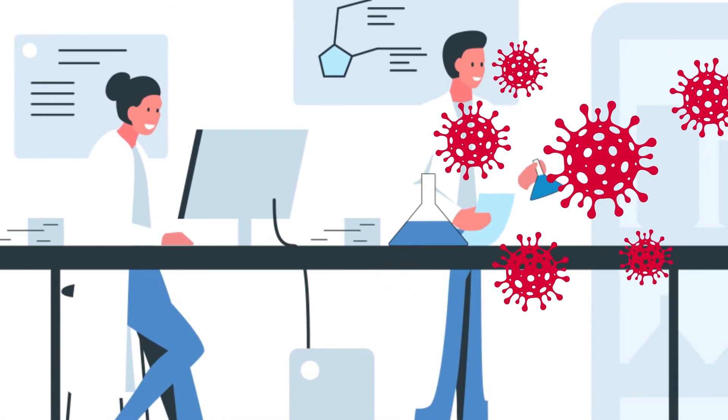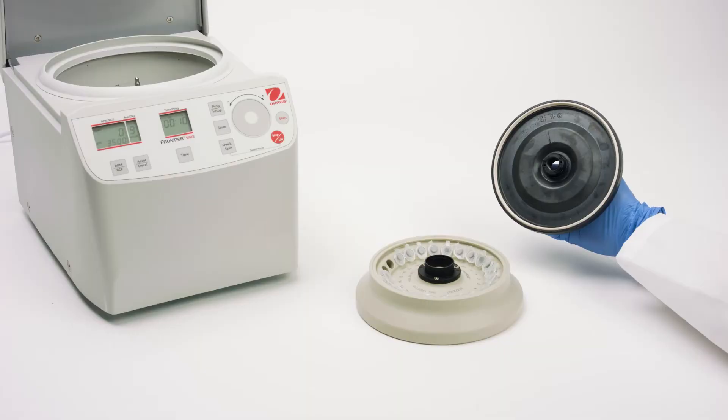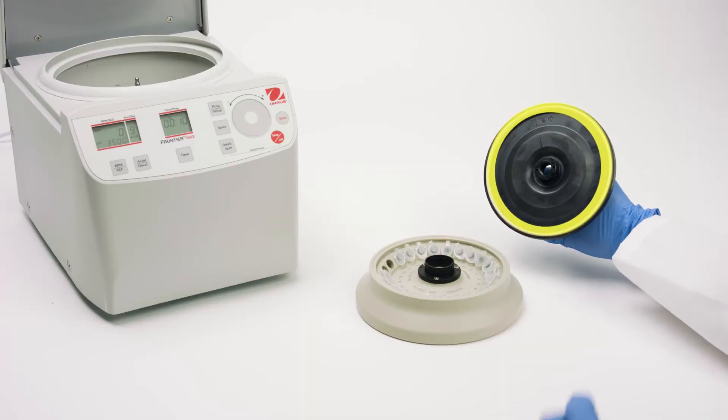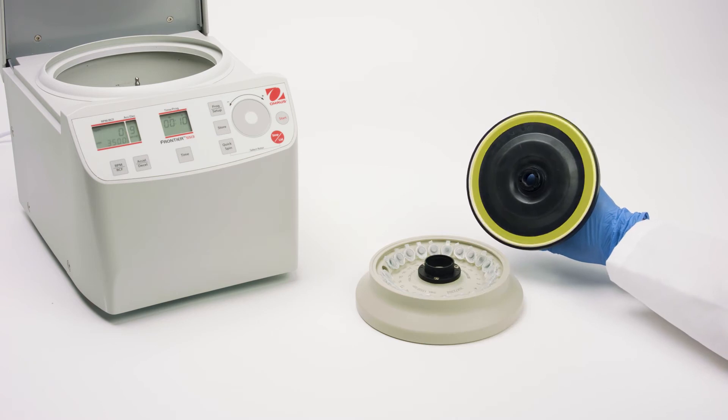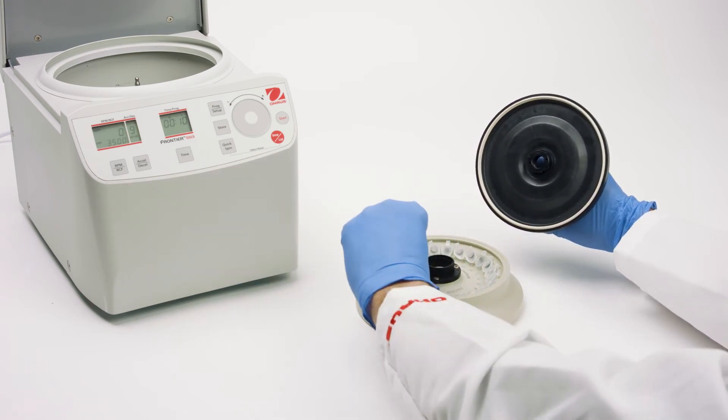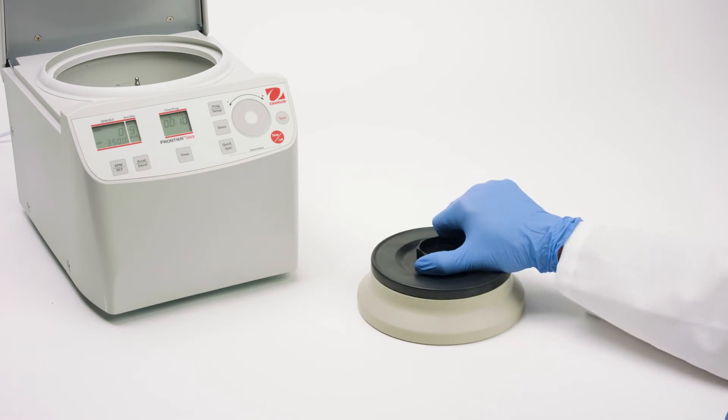Therefore, strict safeguards need to be built into the centrifuge design, such as bio-sealed rotor lids. O-House BioSeal rotors use gaskets that create a seal between the rotor and lid, preventing aerosols from escaping. The safe and efficient design of the rotor lids require only a quarter of a turn to create an airtight lock.